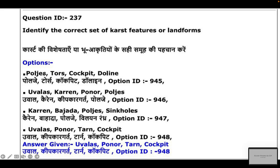So the first option is incorrect. The right answer is Yuvala, Karren, Ponors, and Poljes — and you should know all these features. Poljes are elongated basins having a flat floor and steep walls. Yuvala is basically a larger depression formed by the coalescence of several dolines. All four of these features belong to karst landforms.